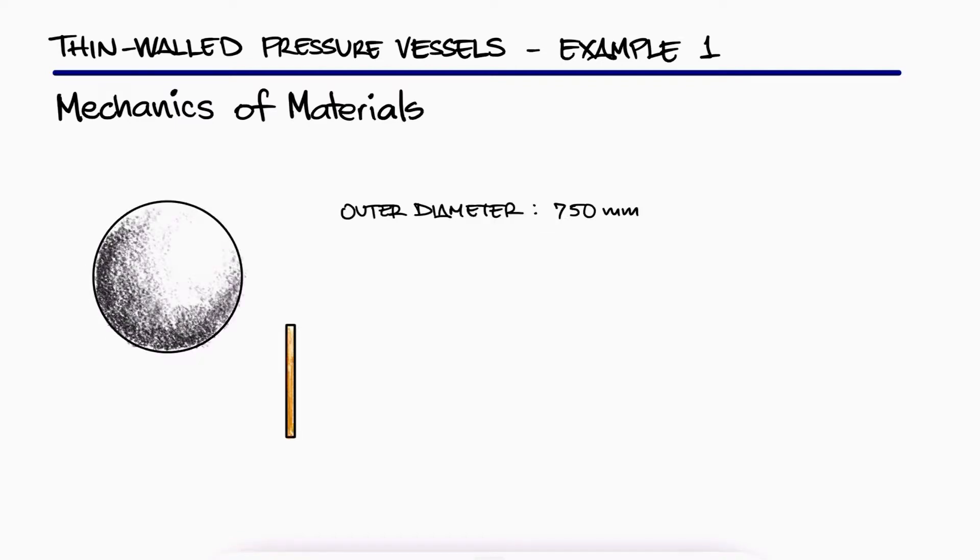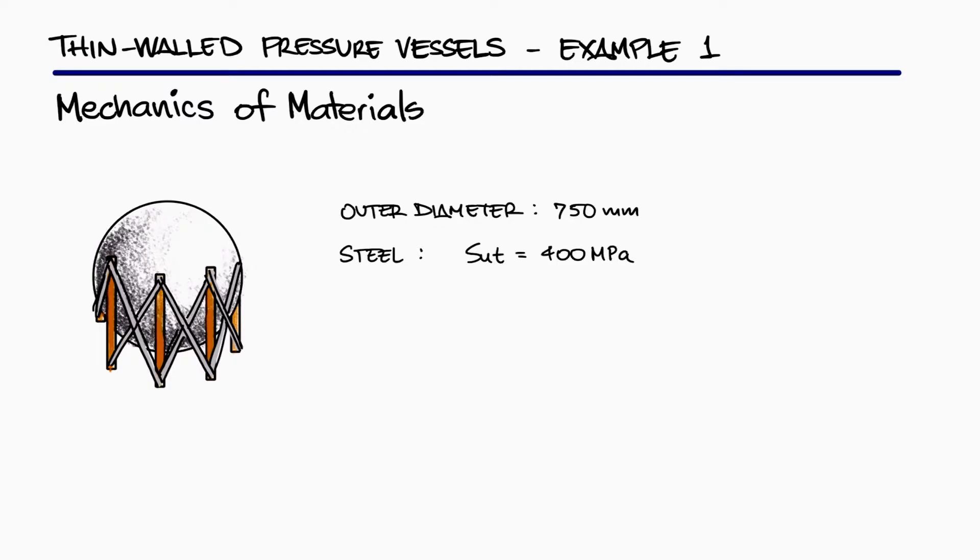A spherical pressure vessel of 750 mm outer diameter is being fabricated from steel which has an ultimate strength of 400 MPa. If a factor of safety of 4 is desired, and the gauge pressure inside the vessel can reach 4.2 MPa, what is the smallest wall thickness that should be used?